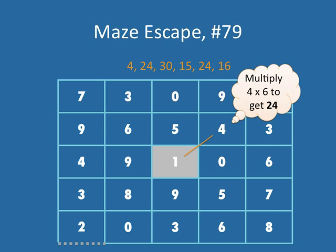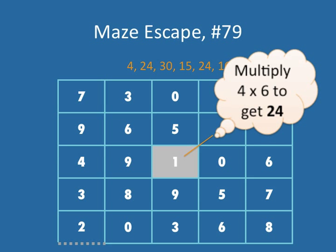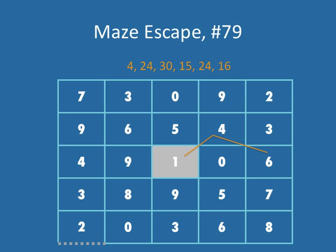The next product is 24. The next product I need to make to get towards the end of the maze is 24. Right now I'm at 4 and I can multiply by 6 to get 24. Notice how I will draw another line here — from the 4 to the 6. 4 times 6 will give me 24.